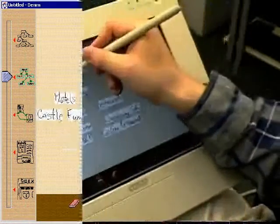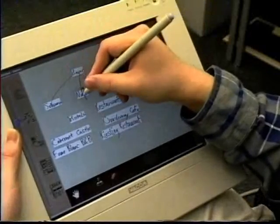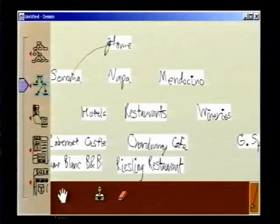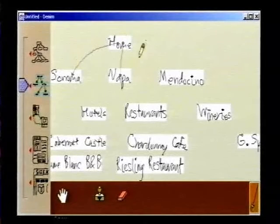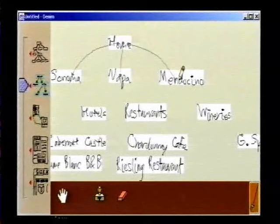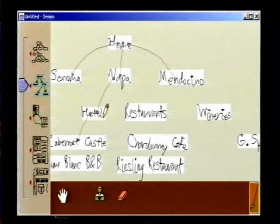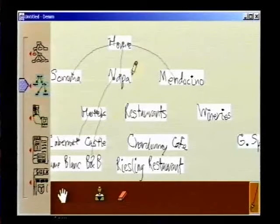After he creates a rough sitemap, Bob draws lines between the labels to denote relationships. The lines become organizational arrows. An organizational arrow between two pages means that they are related in some way. It has no other semantic meaning to Denim.